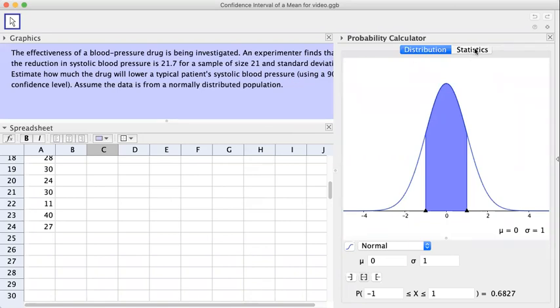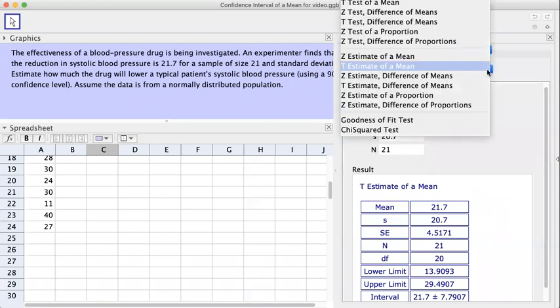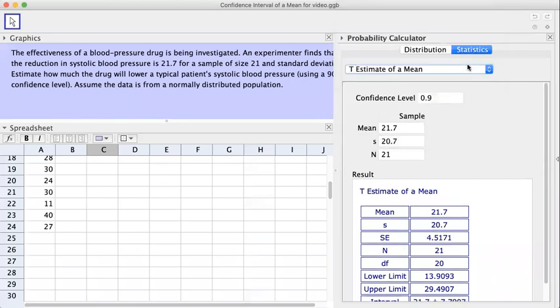You're going to go here, click on Statistics, and then click on this drop down menu right here and you choose T Estimate for the Mean.